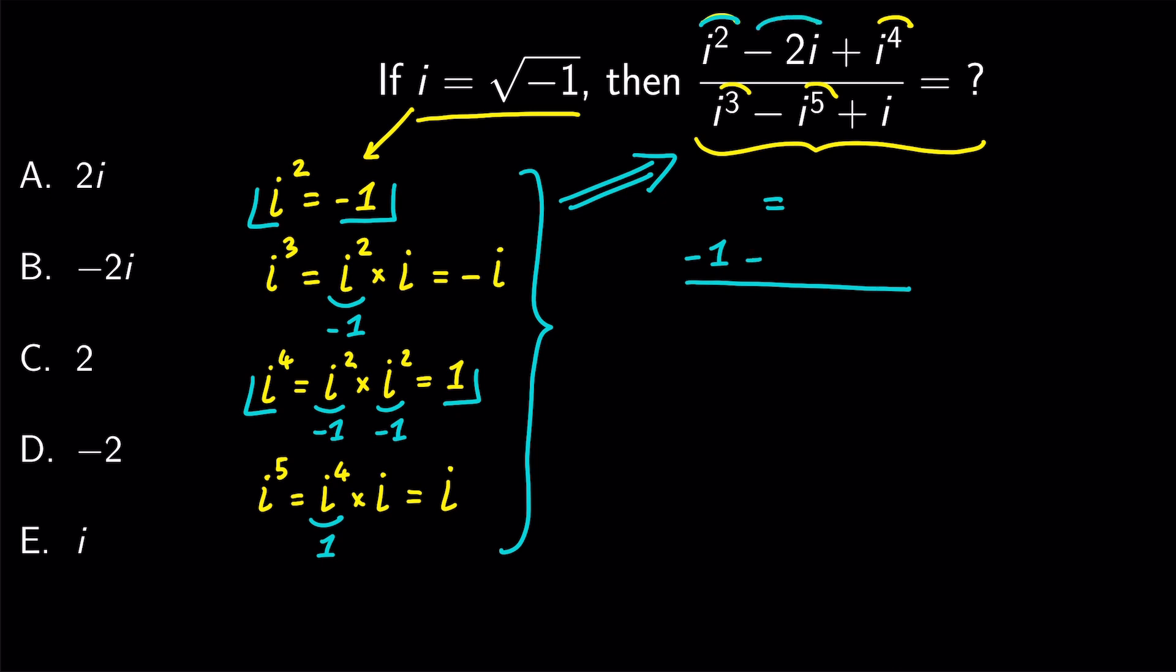minus i to the power of 3 is minus i, minus i to the power of 5 is minus i, and plus i.